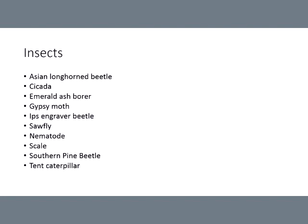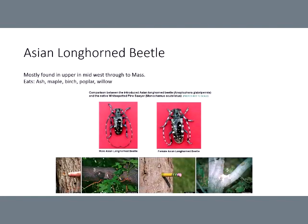The first one is the Asian longhorn beetle. This one is really not a huge threat down here in the south — it's more of an issue up in the Midwest, through Massachusetts and New York. It affects a lot of our hardwoods in that area: ash, maple, birch, poplar, and willow. The Asian longhorn beetle is one of the reasons why you shouldn't move firewood from one location to another — the saying is 'buy it where you burn it' — to avoid spreading invasive species. While this species isn't a problem in Louisiana yet, we want to keep it that way, and good practices are important.